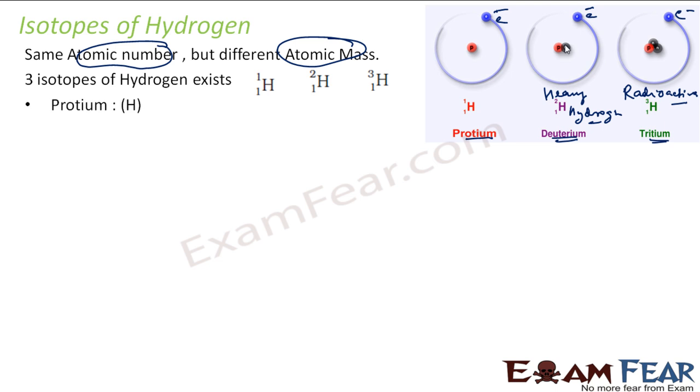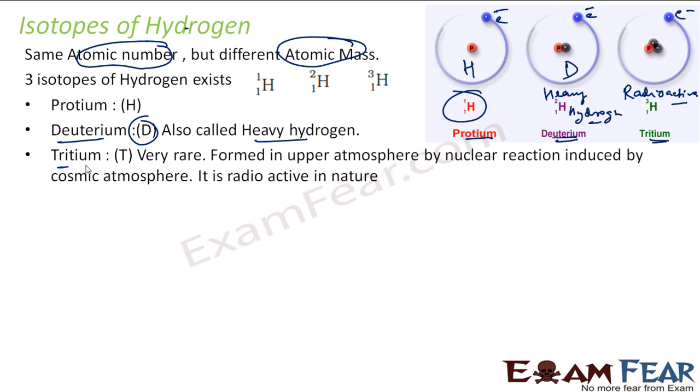So we have protium denoted by H, deuterium also called heavy hydrogen denoted by D, and then we have tritium. It is very rare, formed in the upper atmosphere by nuclear reaction, and it is radioactive.